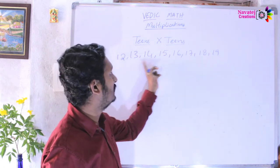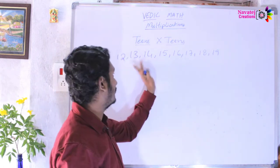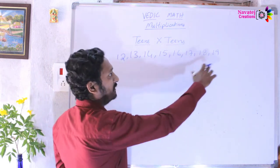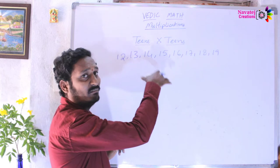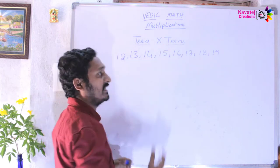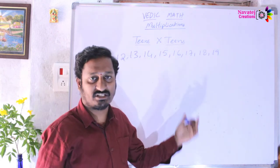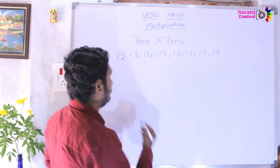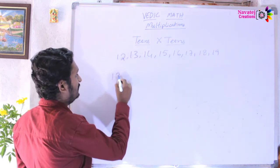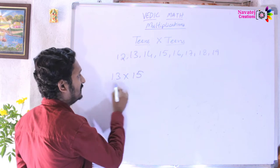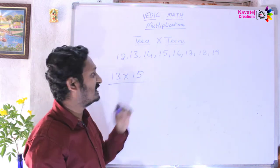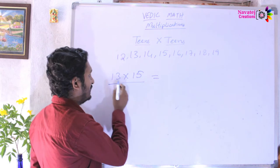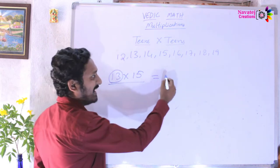In teens into teens, I will cover 13 to 19 numbers, and also include 12. These numbers share the same multiplication process — simple and fast. In the first example, we will multiply 13 into 15.